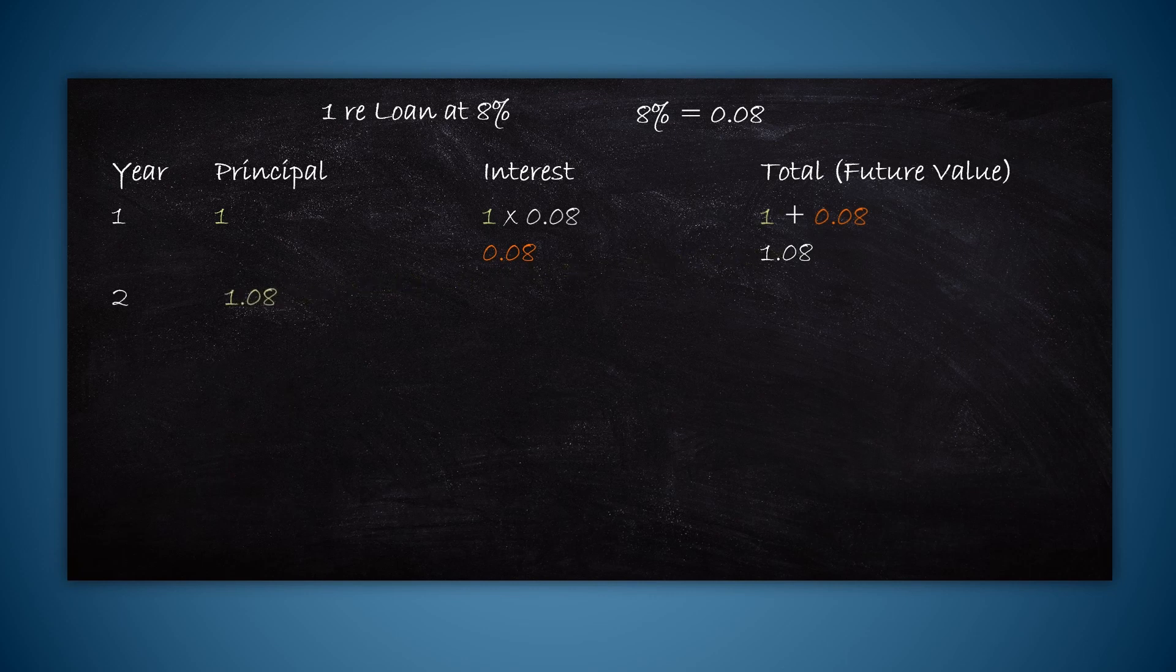For the next year, since we are taking compound interest, the principal will become 1.08, which is including the interest. The interest for this year will be 1.08, the now principle, into 0.08. The total now will be 1.08 plus 1.08 into 0.08. We will not calculate this but we will simplify the equation. So we will take the common factor out, 1.08, and we will get this equation as 1.08 into 1 plus 0.08. This is nothing but 1.08 into 1.08, which is 1.08 square.